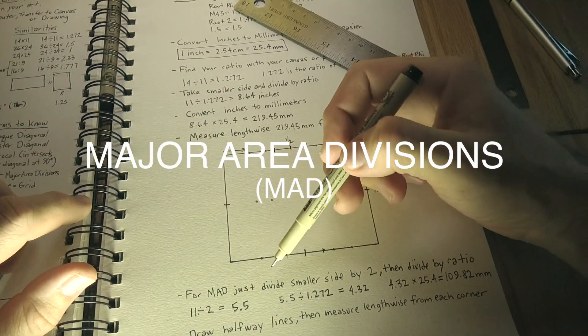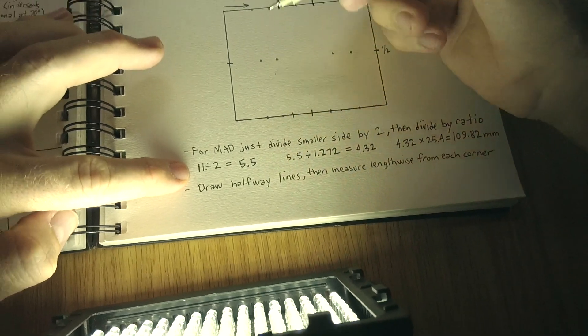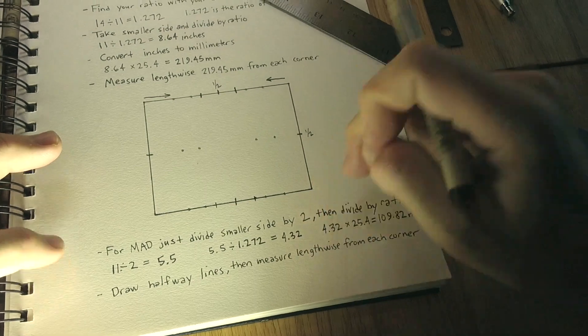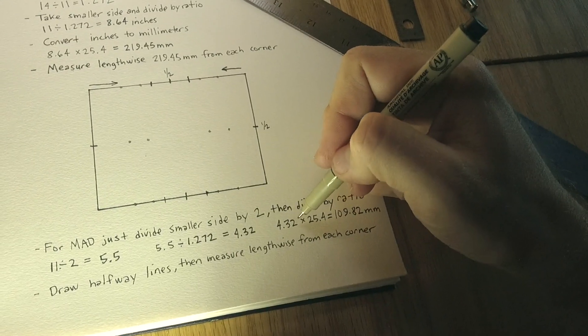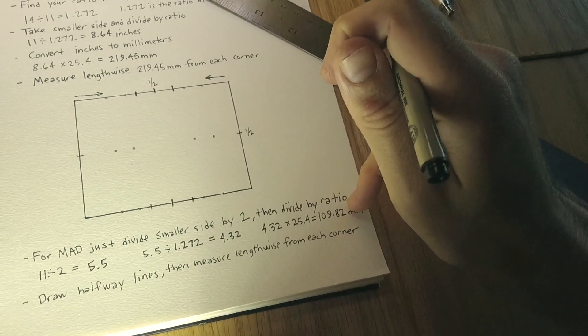So to get the major area divisions, we just divide the smaller side by 2, which we get 5.5 for the 11 by 14. And then we divide 5.5 by our ratio and we get 4.32. So 4.32 inches times 25.4 will give us our millimeter measurement.